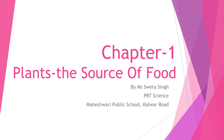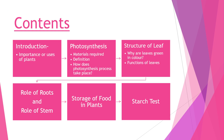Hello students, I hope you all are good. Let us start with Chapter 1 of Science - Plants: The Source of Food. In this chapter we will discuss the importance and uses of plants, the process of photosynthesis, its definition, what things are required for it and how it takes place. Then we will discuss the structure of a leaf, why leaves are green in color, and the functions of a leaf. After that we will come to the role of roots and the role of stem in photosynthesis, how food is stored in plants, and what is a starch test and how it is done.